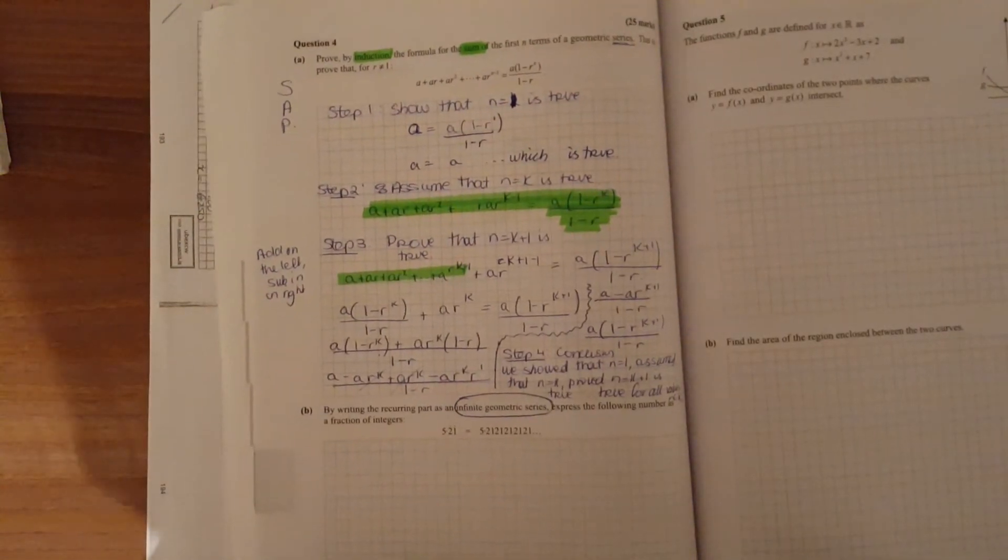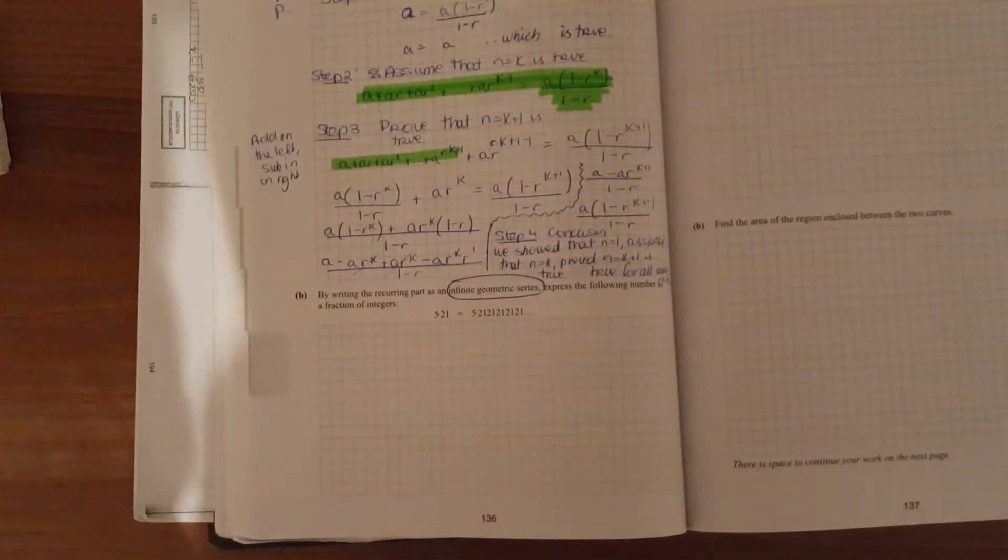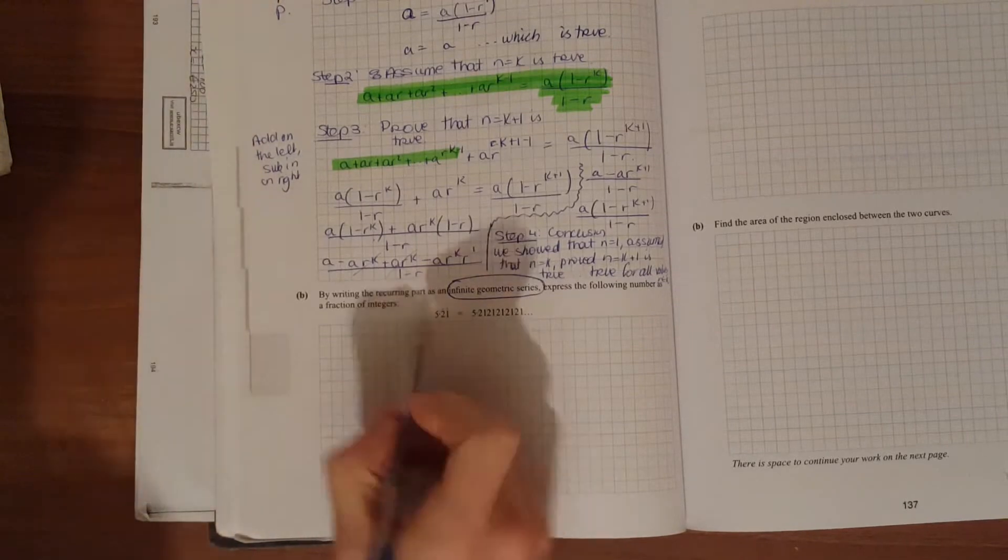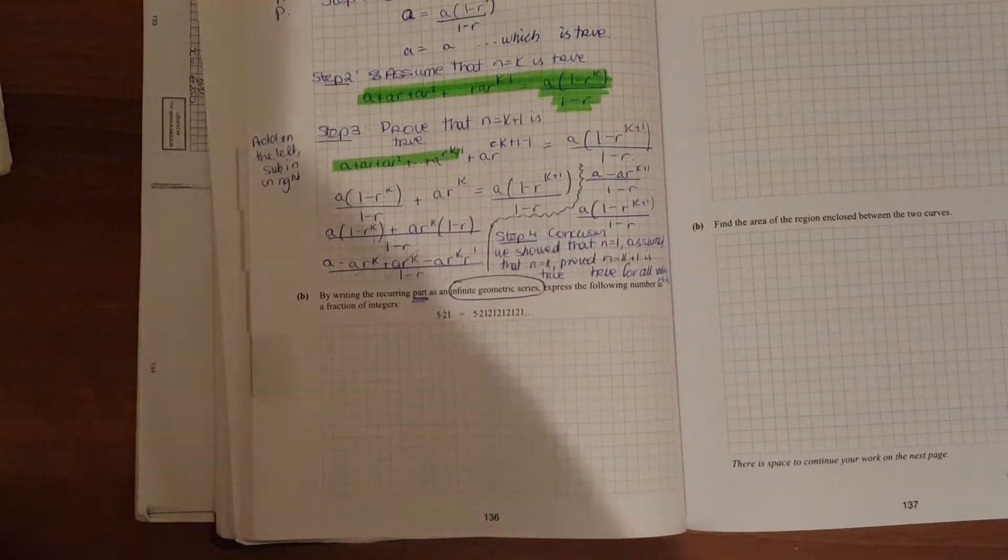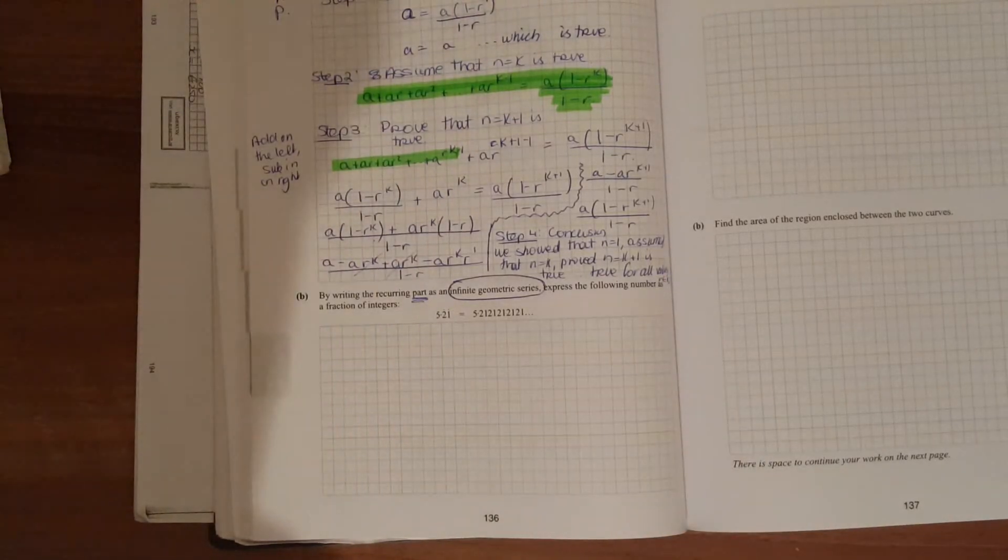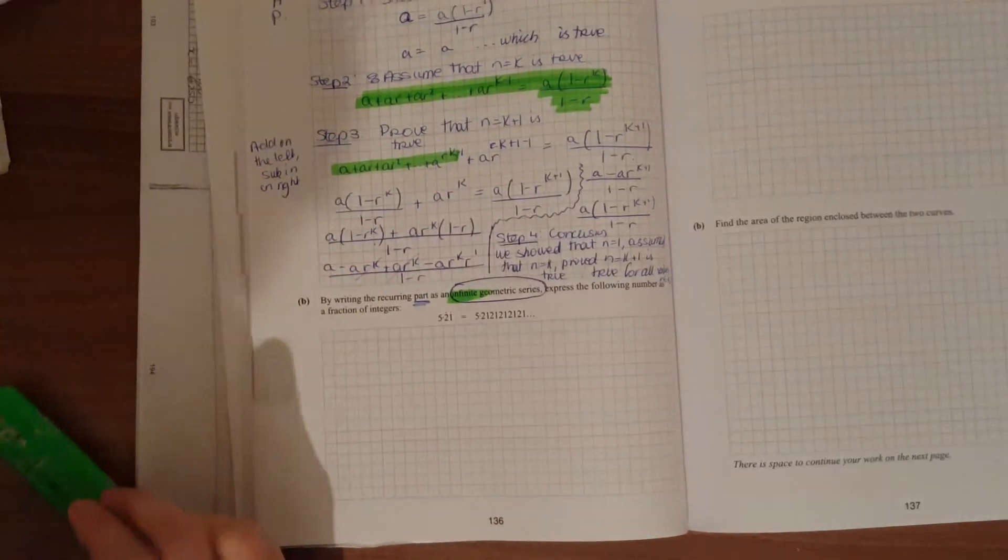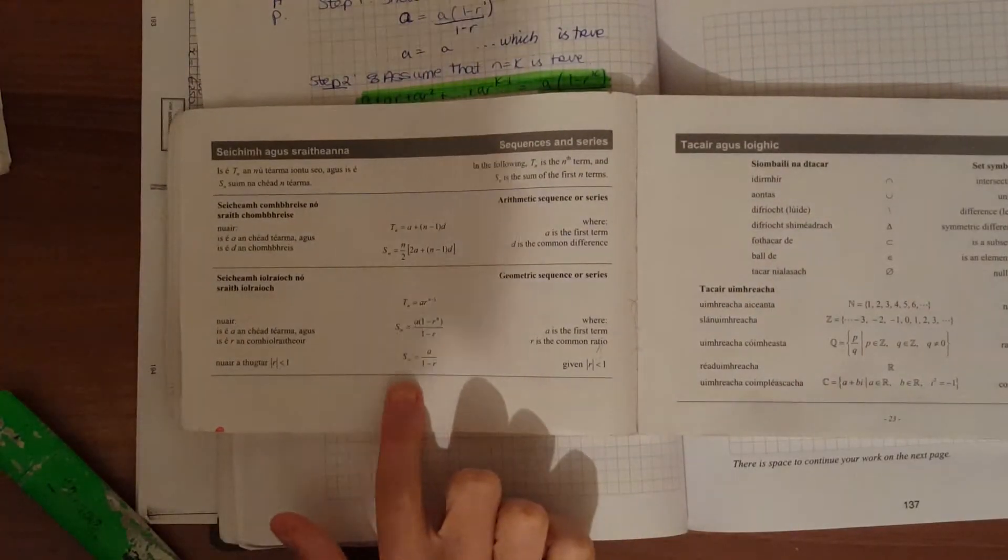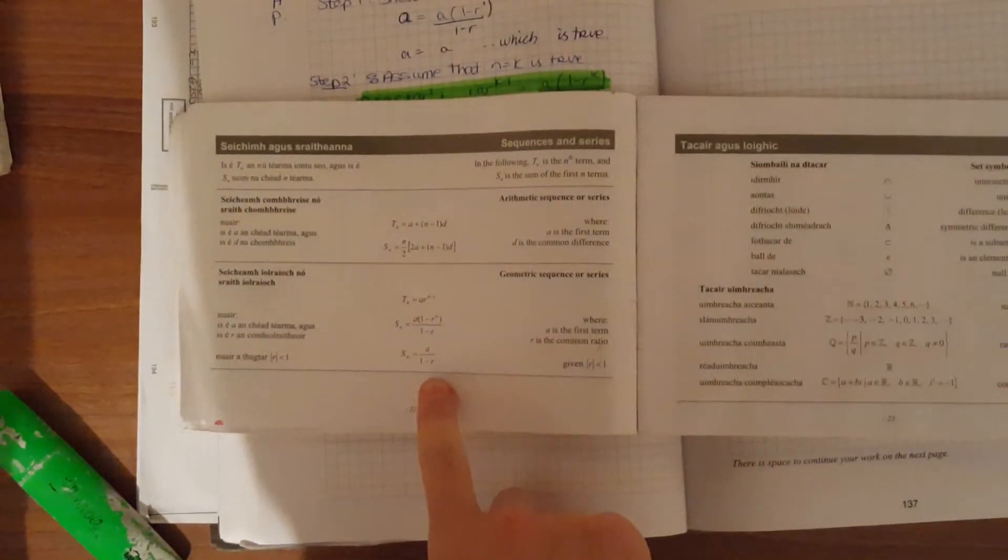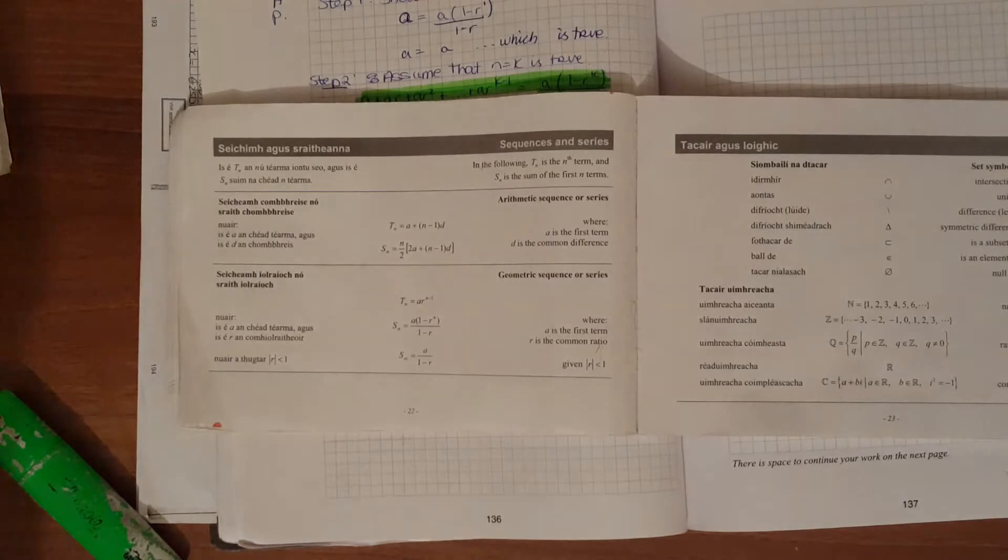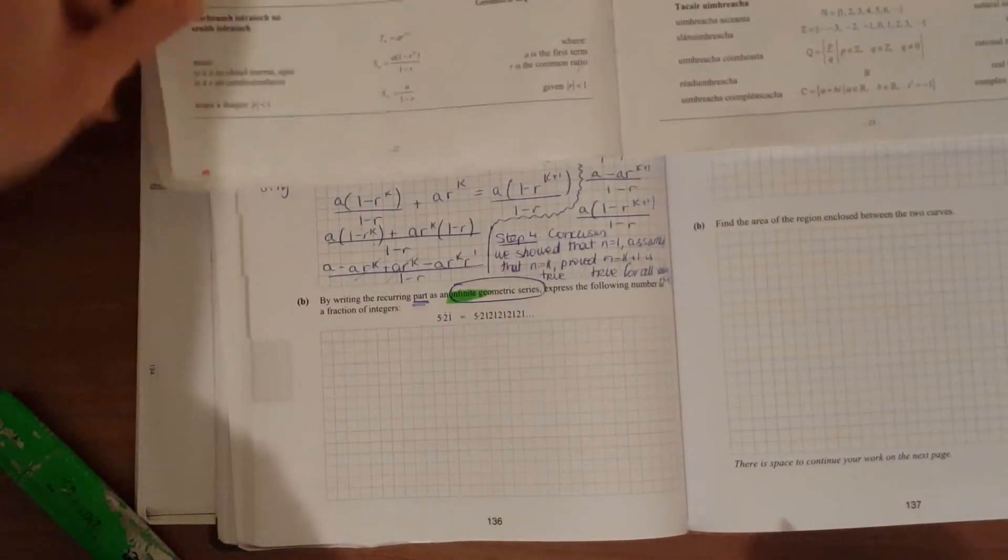We may have a look now at this second bit, just to get it done. By writing the recurring part, so the bit that repeats itself, as an infinite geometric series. Now once you see infinite and a geometric series, we know we're going to be using this formula here. S to infinity is A over 1 minus R. To tell us what A is: A is the first term, and R is the common ratio.